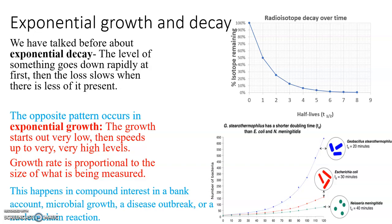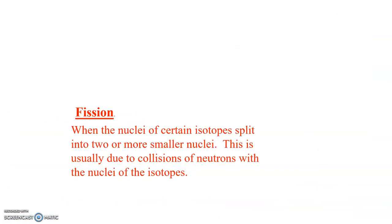You also see this in patterns of compound interest in bank accounts, disease outbreaks, population growth, and of course what we're going to talk about today: a nuclear chain reaction.